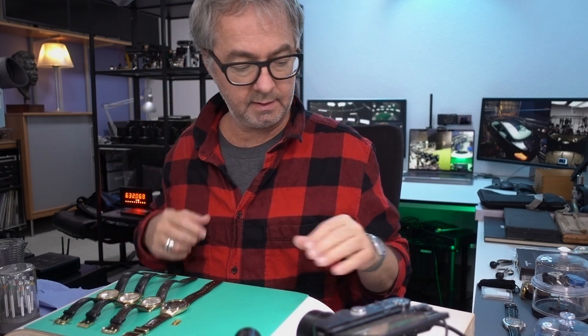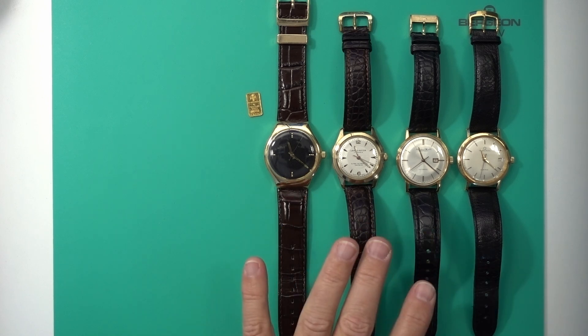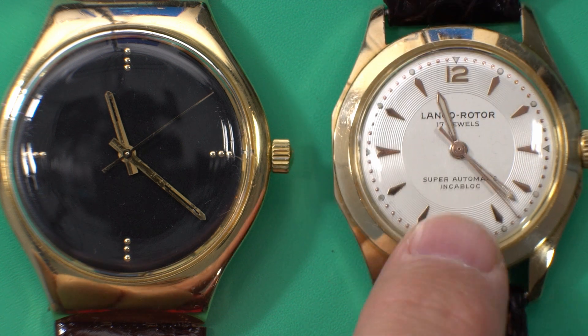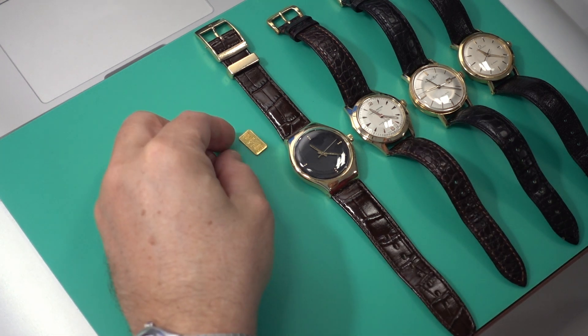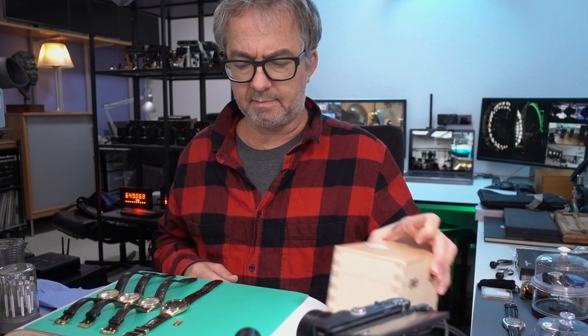Today I'm going to test the gold content in these four watches that are gold. One of them is 14 carat, and this one is 14 carat, and the others are 18 carat. And then I have a 24 carat little ingot to use as a test sample.